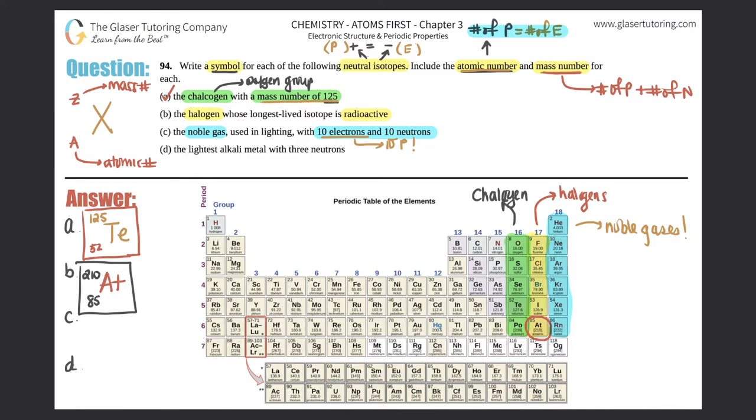That's actually neon, so Ne would be my symbol. 10 goes on the bottom because that's the atomic number. Mass number is protons plus neutrons: 10 protons, 10 neutrons. We add those two together, so we get 20 as my mass number.